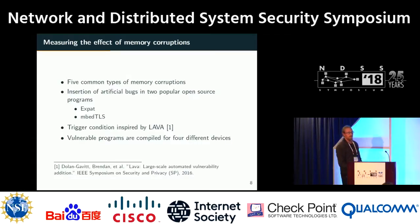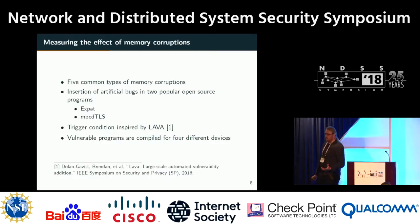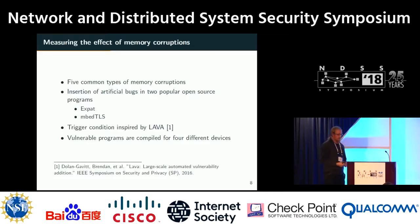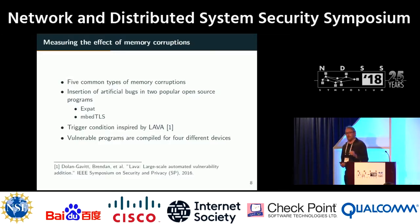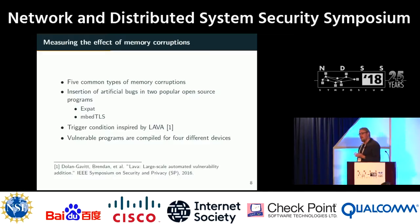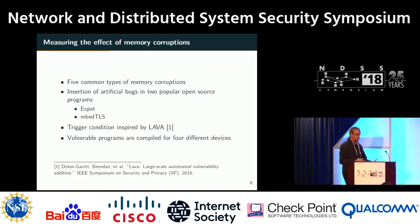Having outlined these challenges, we studied the effects of different kinds of memory corruptions. We took five common types of both spatial and temporal memory corruptions and inserted them into popular open-source programs found on embedded devices — namely mbedTLS and expat. The trigger conditions were inspired by the LAVA work, providing a controlled environment. The vulnerable programs were compiled for four different devices ranging from a desktop-like device to Type 1, Type 2, and Type 3 devices.